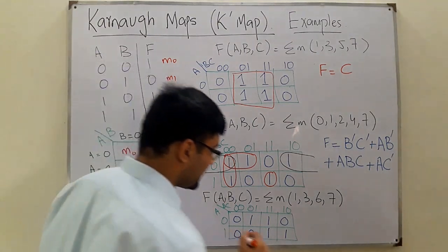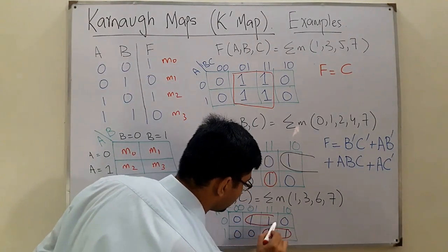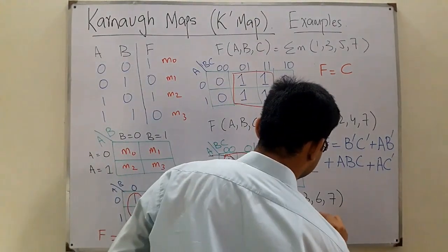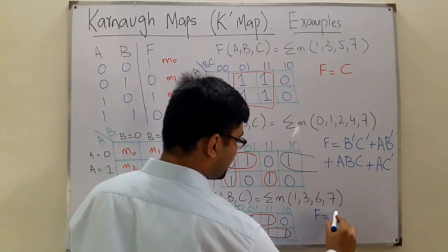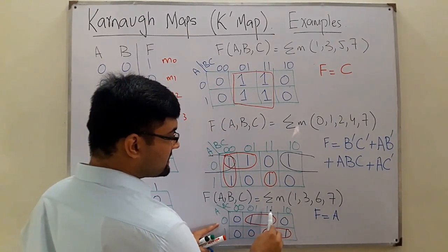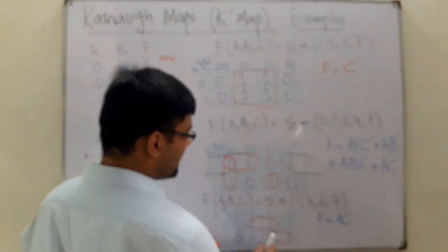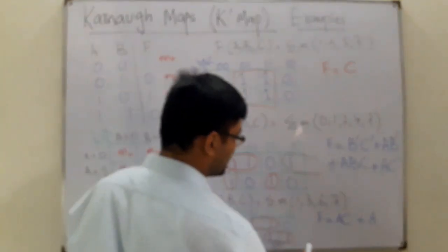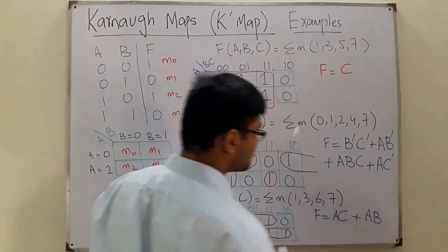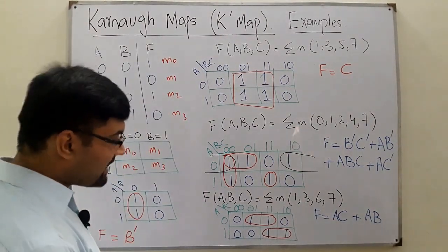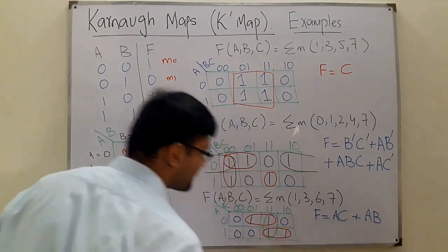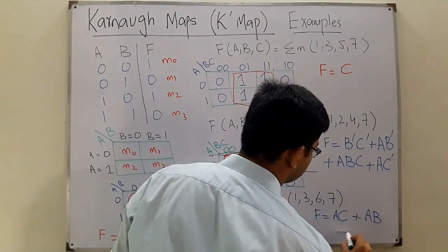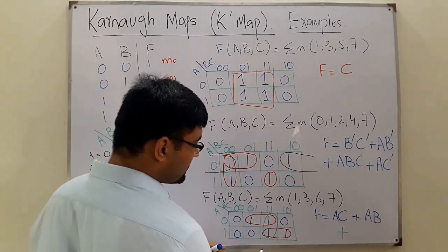We can group the first two ones together and the second two ones together. For the first group: A is not changing and is zero, B is changing, C is not changing — so we get A complement · C. For the second group: A is not changing at one, B is not changing, C is changing — so we get A · B.